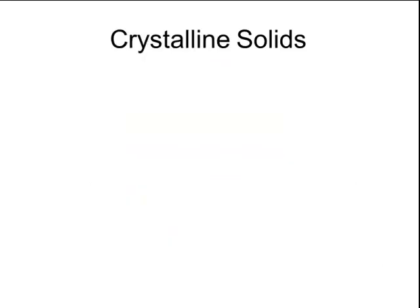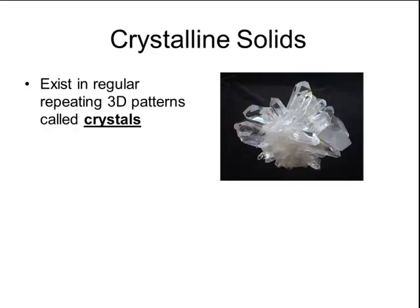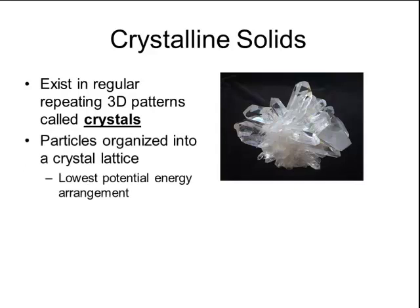There are two main types of solids: crystalline solids and amorphous solids. Crystalline solids exist in a regular repeating three-dimensional pattern called a crystal. The particles of a crystal are organized into a crystal lattice structure. We learned about lattice structures when we talked about chemical bonding. When the crystal lattice forms, the particles arrange themselves so that they have the lowest amount of potential energy, and this creates a very stable arrangement.